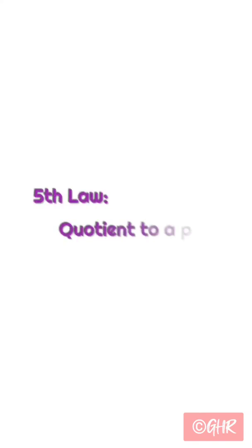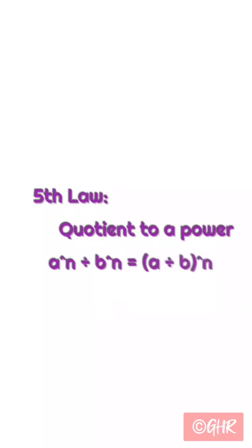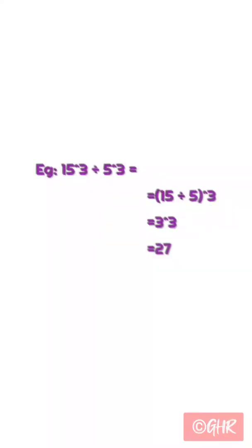Fifth law: quotient to a power. a to the power of n divided by b to the power of n is equal to a divided by b whole to the power of n. Example: 15 to the power of 3 divided by 5 to the power of 3 is equal to 15 by 5 whole to the power of 3, which equals 3 cubed, which equals 27.